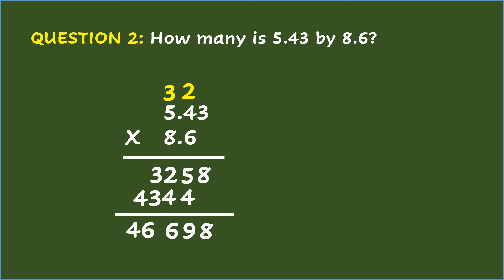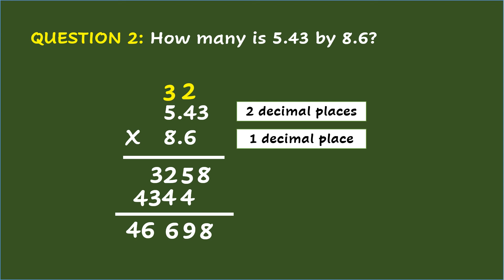After this, count the decimal places in the first factor. In 5 and 43 hundredths, there are 2 decimal places — that is 43 hundredths. And in 8 and 6 tenths, there is only 1 decimal place — that is 6 tenths. So there are 3 decimal places in the factors. Lastly, count 3 decimal places in the product, just like the number of decimal places in the factors, and put the decimal point. The final answer is 46 and 698 thousandths.